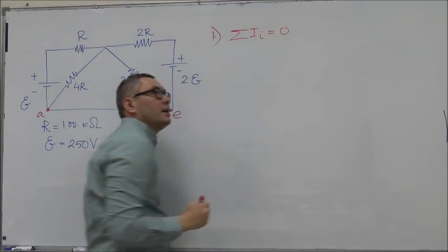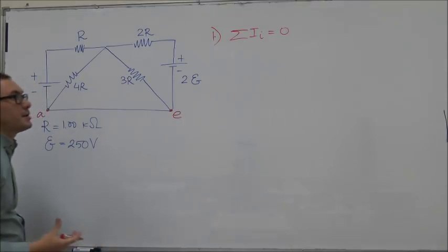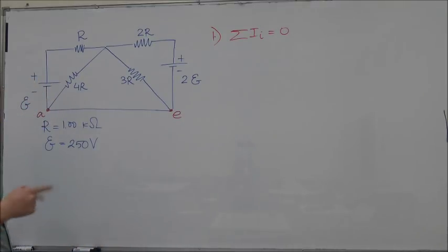We usually take the currents that go into the junction as positive and the currents going out of the junction as negative. First we have to define the currents, and the definition is random, it's up to you.